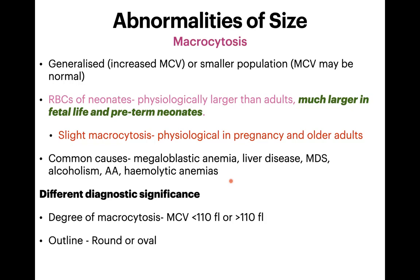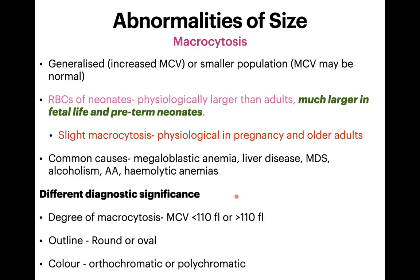The outline of macrocytes also helps: round macrocytes are commonly found in liver disease and alcoholism, whereas oval macrocytes are highly suggestive of megaloblastic anemia. The color matters too: polychromatic macrocytes are found in hemolytic anemia, while orthochromatic macrocytes are seen in conditions with ineffective erythropoiesis. By assessing degree, outline, and color, you can significantly narrow the differential diagnosis just by looking at the peripheral smear.